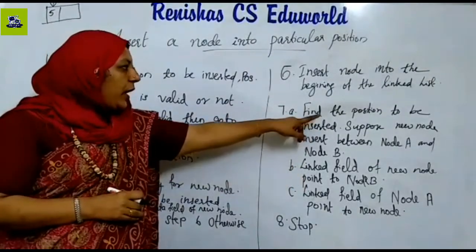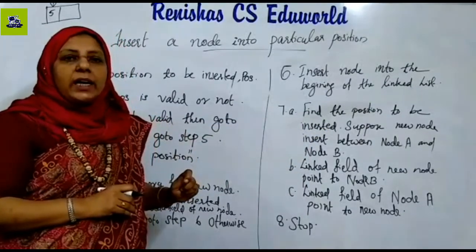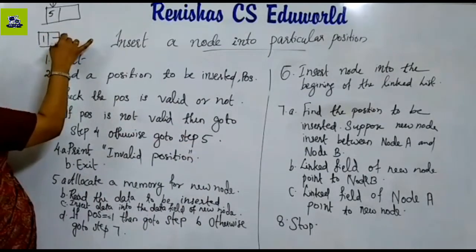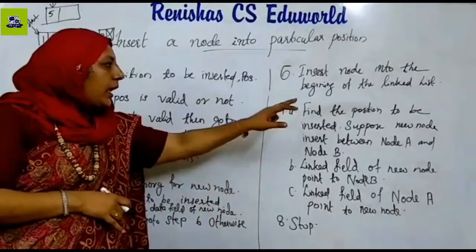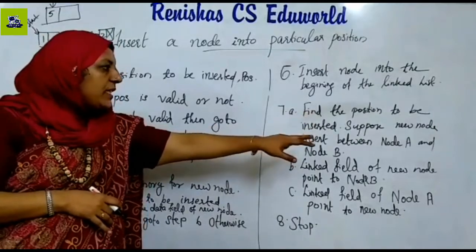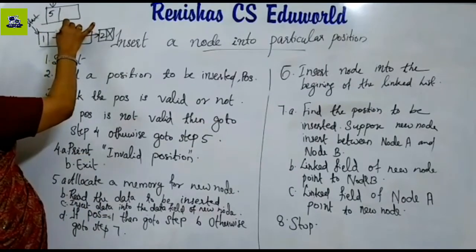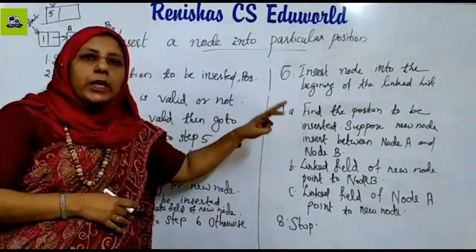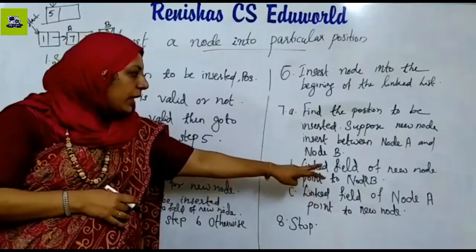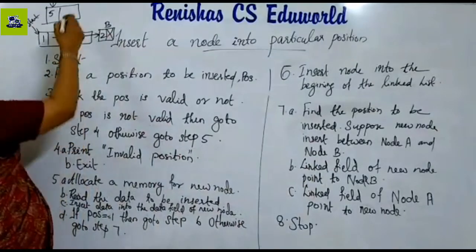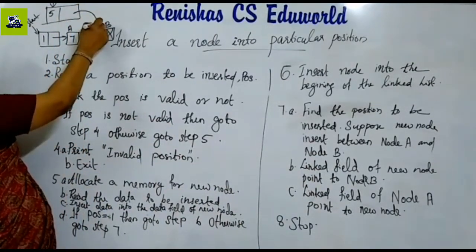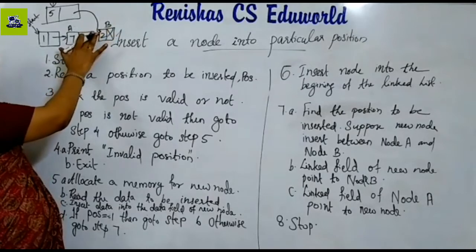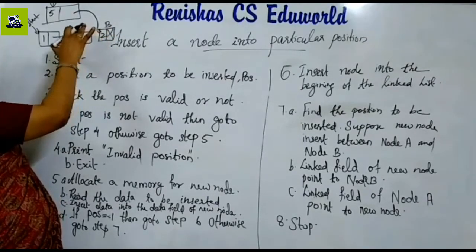Otherwise, find the position to be inserted. The new node is inserted between node A and node B. We find the correct position and insert the new node between A and B. The linked field of the new node points to node B.